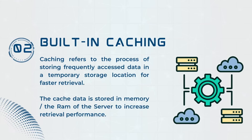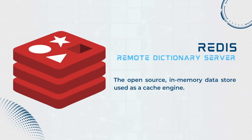When a subsequent request for the same data is made, the system first checks the cache. If the data is found there, it can be retrieved and served much more quickly than fetching it from the original source, reducing processing time and improving overall response time. To ensure the data in the cache remains accurate and up-to-date, cache invalidation mechanisms are implemented — whenever the original data is modified, the corresponding cache entry is cleared. ServerPod uses Redis as its caching mechanism, designed to provide fast access to data by storing it primarily in memory, making it well-suited for low-latency and high-throughput operations. You can also use Redis independently without ServerPod.